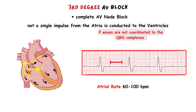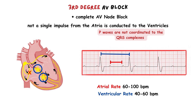Since the ventricles are paced by a focus located below the block, the ventricles will be paced at a rate slower than the atria. The junctional automaticity foci pace at a rate from 40 to 60 beats per minute, and the automaticity foci within the ventricles pace at a rate between 20 and 40 beats per minute. So if we measure the rate using the RR intervals, you will see that the rate of the R waves is also in this range.